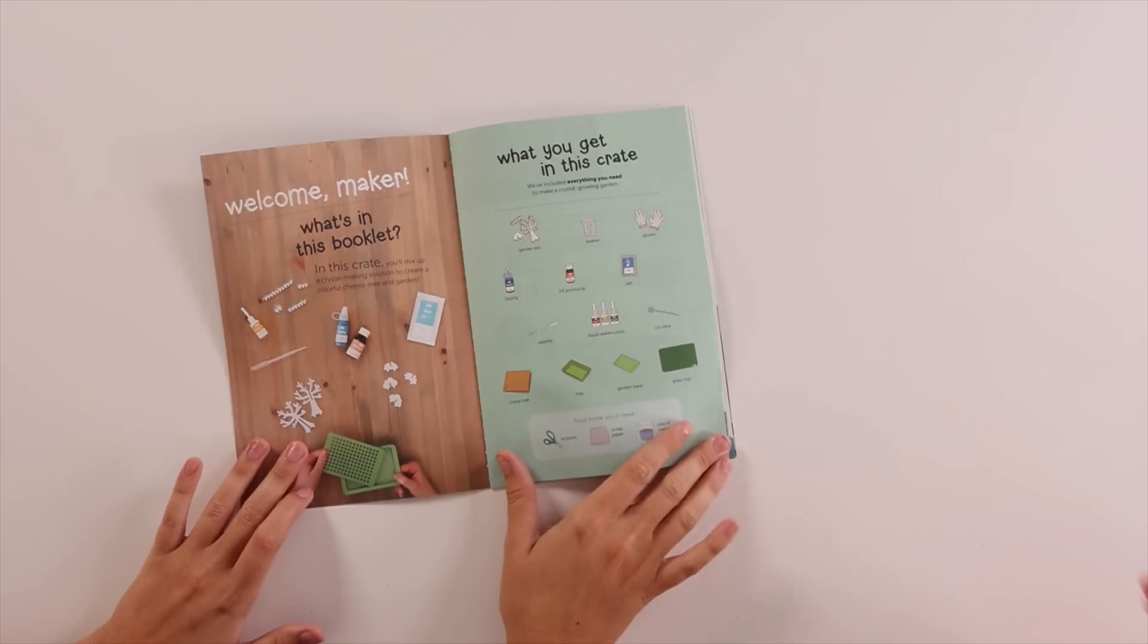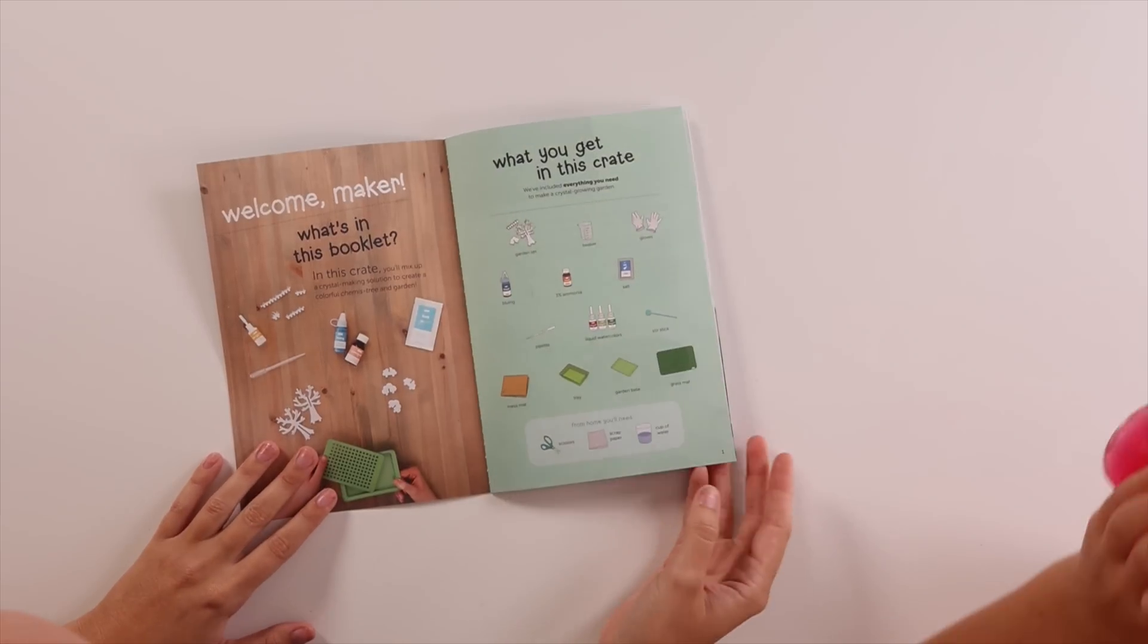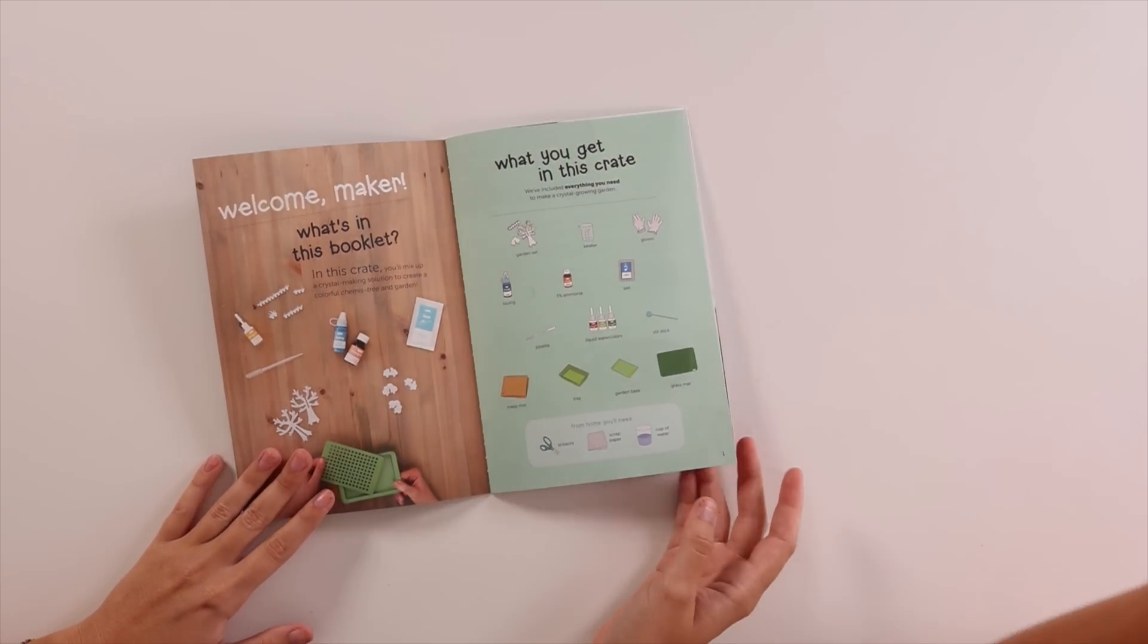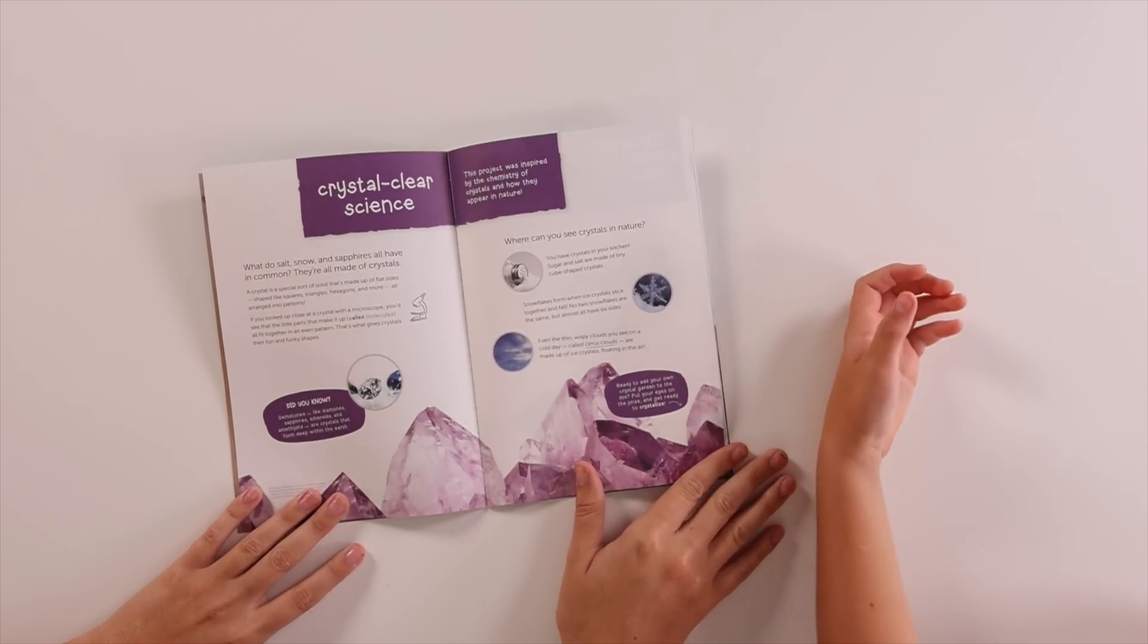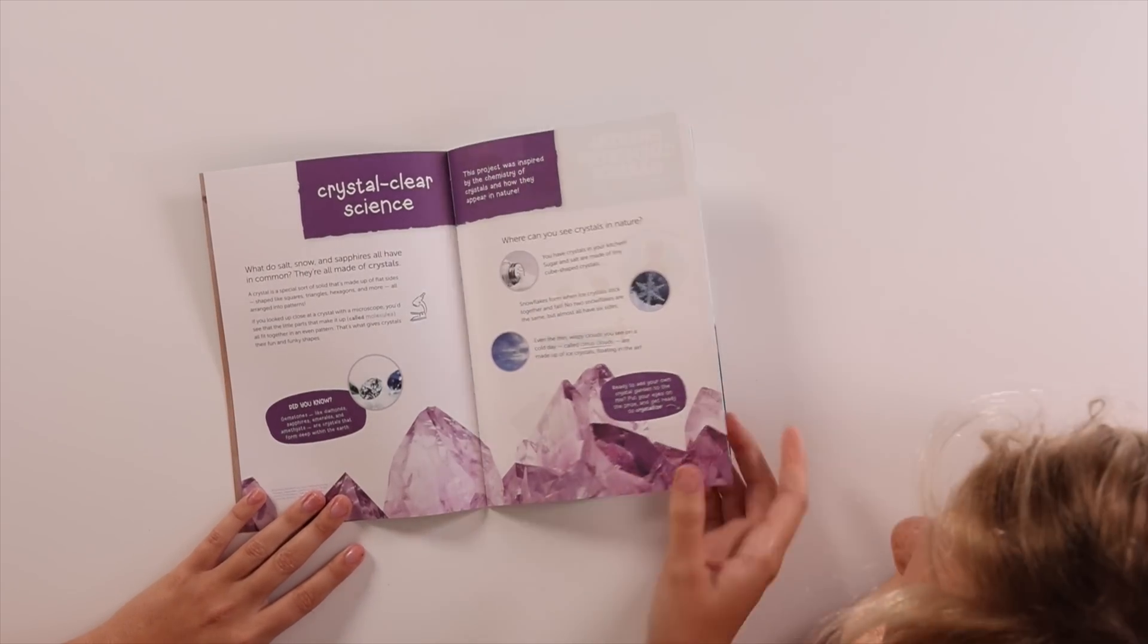Okay, so let's look through the pamphlet first. It looks like it tells us all about what we're going to be getting in this kit. We're going to be making a garden and we have some fun facts about crystals which I think we'll be talking about a little bit later.